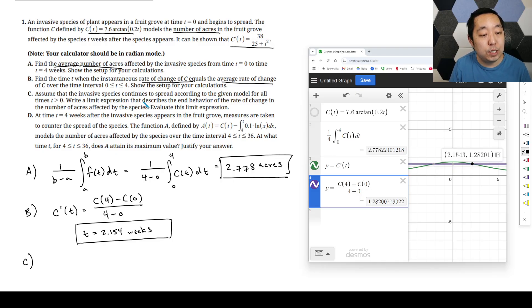Assume the invasive species continue to spread according to the given model for all times T greater than 0. Write a limit expression that describes the end behavior of the rate of change. End behavior of the rate of change - that's the limit as T goes to infinity of not the limit of C of T, the limit of C prime of T. The rate of change is C prime. End behavior of C prime of T.